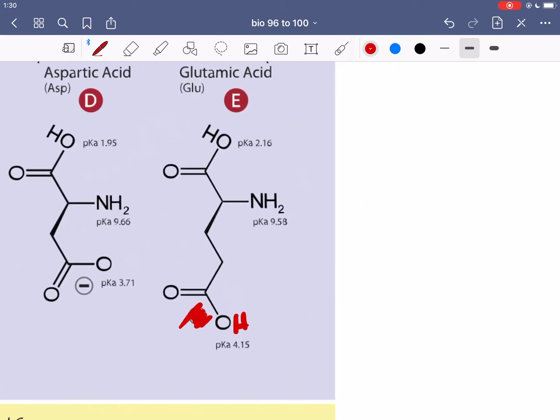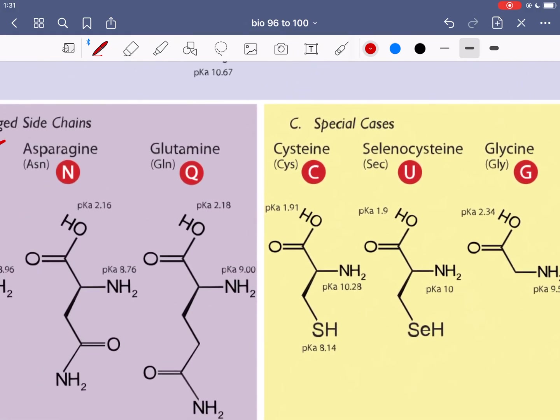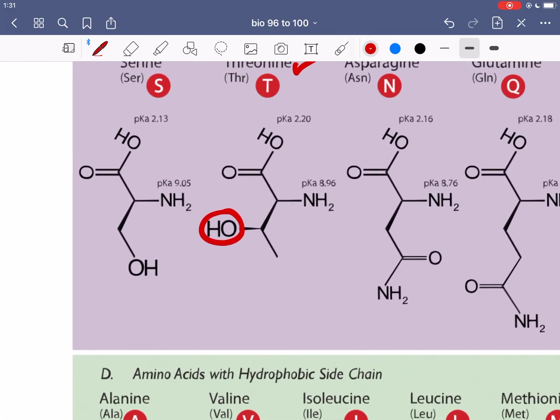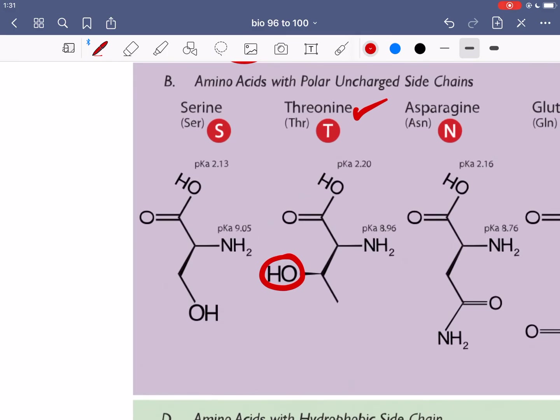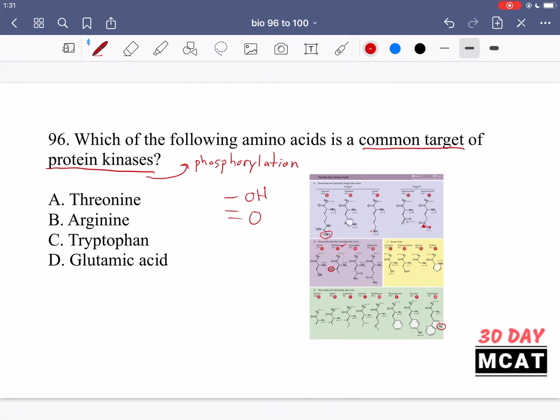Threonine is much easier to phosphorylate with the OH group. With glutamic acid, sometimes it has a negative charge, sometimes it doesn't and then it's also doing a whole resonance thing between two different oxygens. One is double bonded while the other is not but there's no double bonding going on with threonine. So the question asked us which one is a common target of protein kinases meaning phosphorylation. Our best answer is going to be threonine because this is commonly phosphorylated.